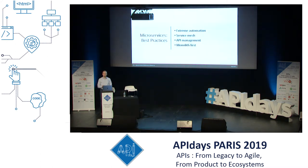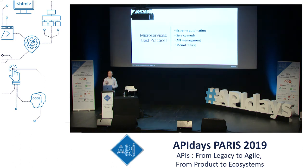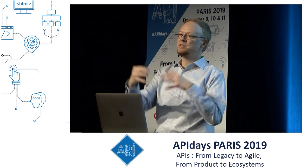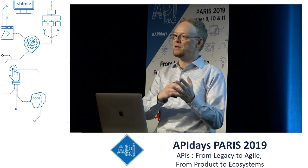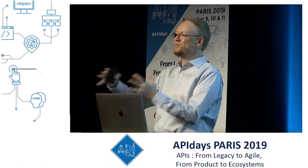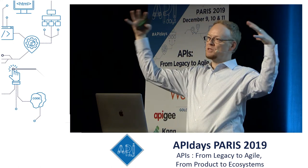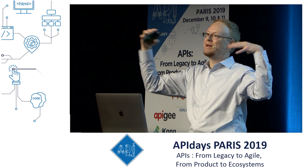Some best practices: extreme automation — make everything automated, no humans in the loop. Use service mesh like Istio. Use API management. And monolith first — it's a little controversial, but it's a lot safer choice to start with a monolith to understand your business problem. If you're doing something new, get it working, show value, then convert to microservices instead of starting with microservices, paying a huge price up front to figure it all out, and then running out of time.